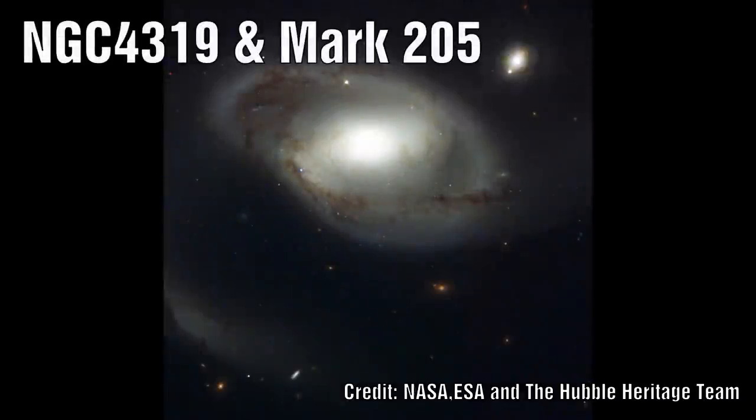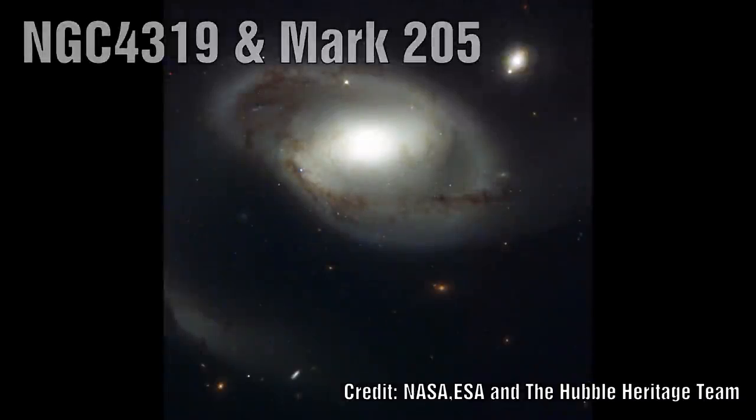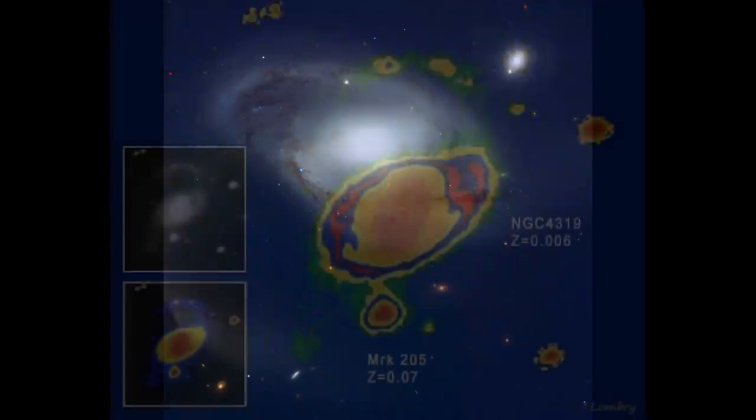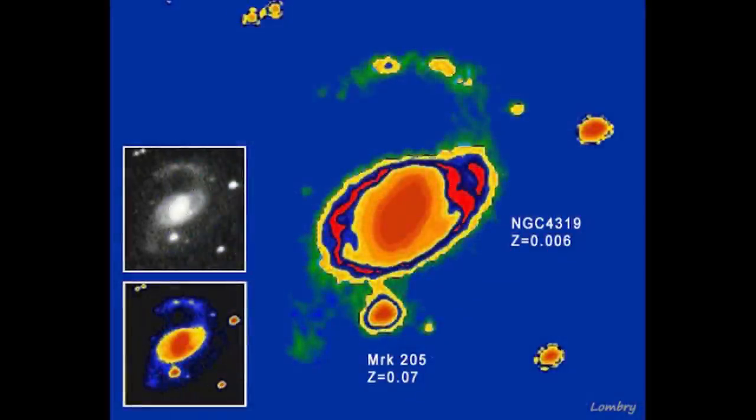NGC 4319 and Markarian 205. Probably the most famous connection and the most controversial one Arp has looked at. Here Arp showed in an image from 1971 that there was a clear connection in the image between these two objects. Here we have a central galaxy with a quasar situated just below it.